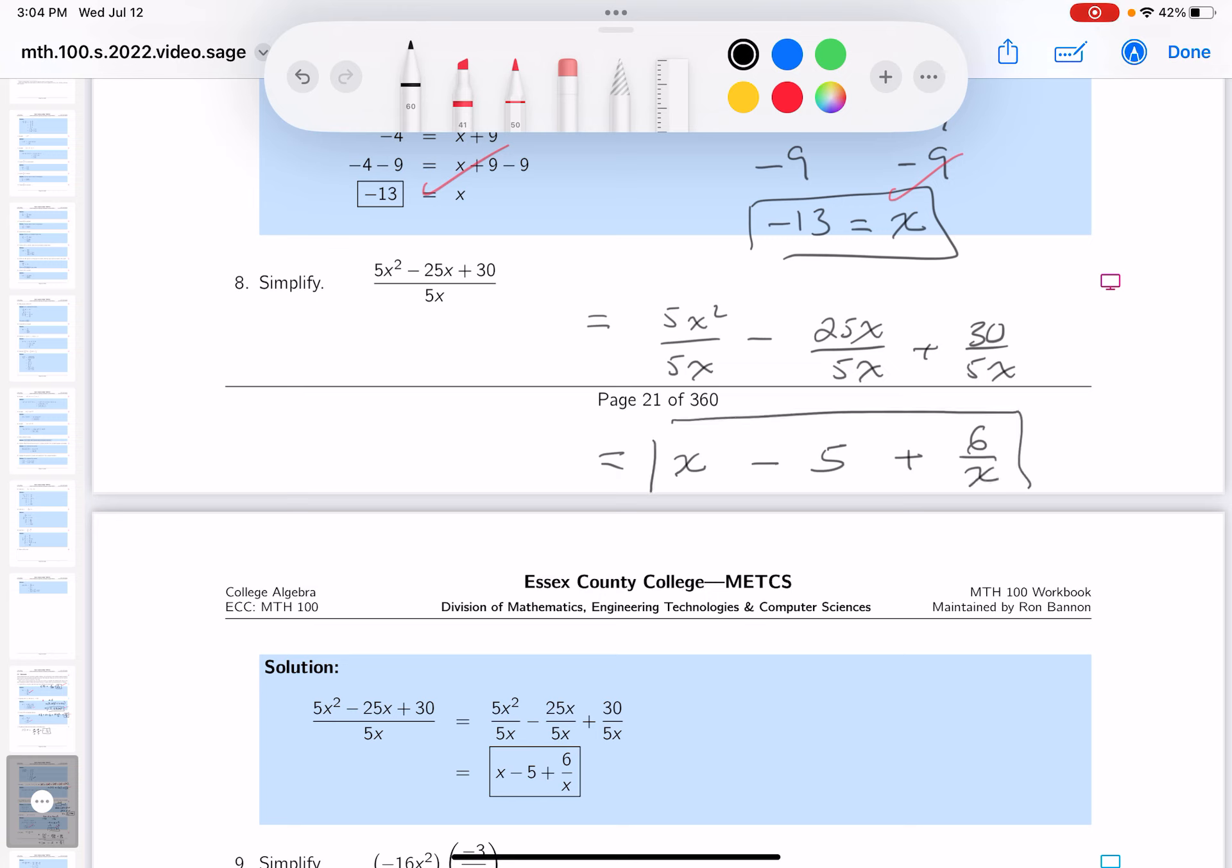I'm going to commit to that answer, putting a box on it. And the next thing I want to do is get the red pen out, so to speak, and see if I got it right. Looking at this over here, I see x minus 5 plus 6 over x, and that's considered a simplification of that problem. Thank you.